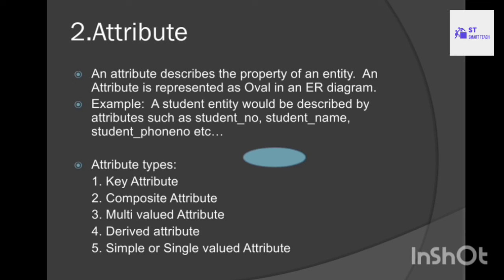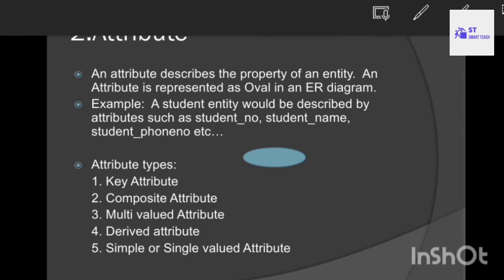The next one is attribute. An attribute is nothing but the properties of an entity. It describes the properties of an entity. For example, if student is an entity, then the attributes — the properties of that entity — are student number, student name, and student phone number. Attributes are represented using oval or ellipse symbols.